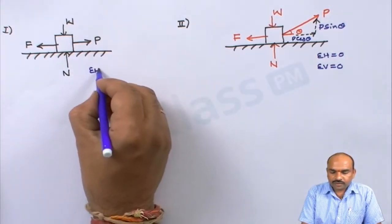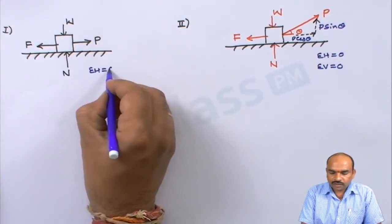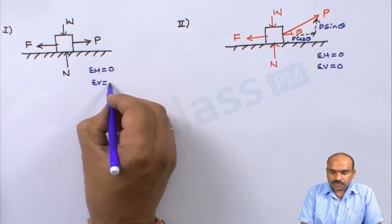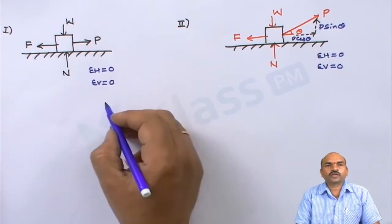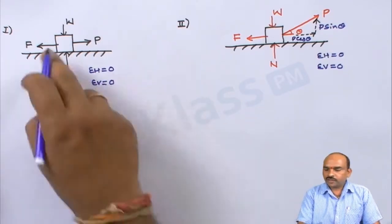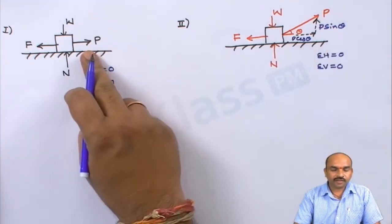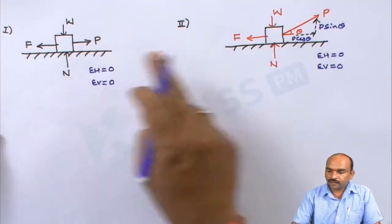We write the horizontal forces and see the difference between these two cases: in Case 1 the applied force is horizontal, while in Case 2 the applied force is inclined.